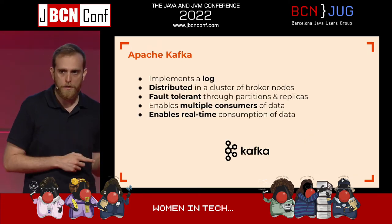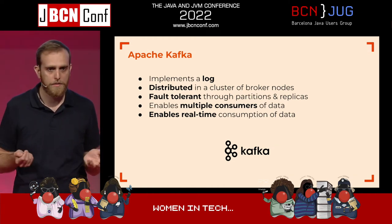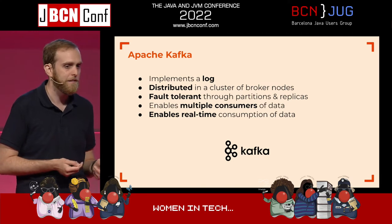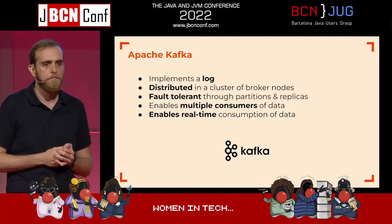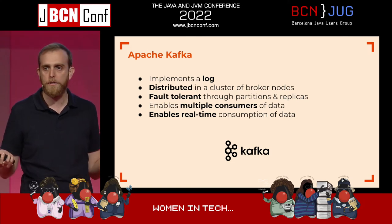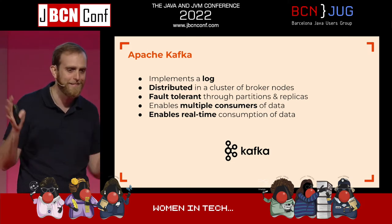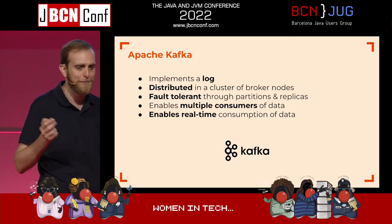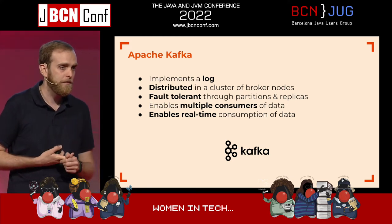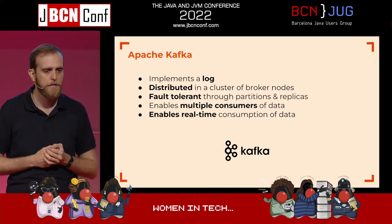The second technology we're using is Apache Kafka. It implements a log, but not a common log like a file — it's a distributed log. It gets distribution through a cluster of broker nodes. It's fault tolerant because it uses partitions and replicas, and it enables multiple producers of data, multiple consumers of data, and real-time consumption of data.